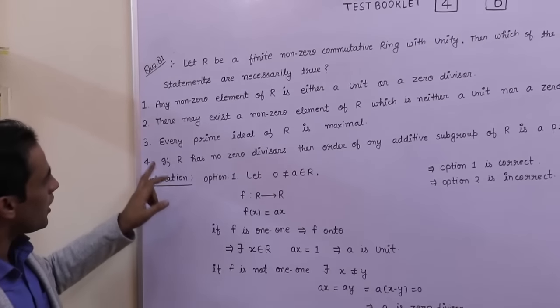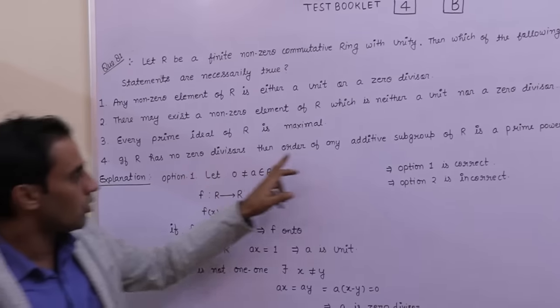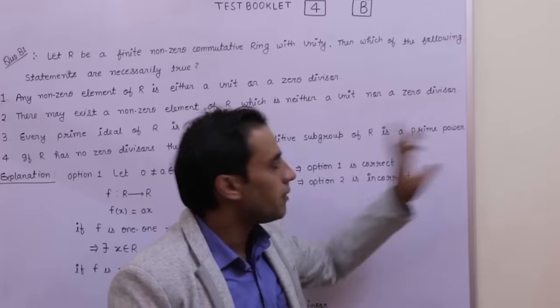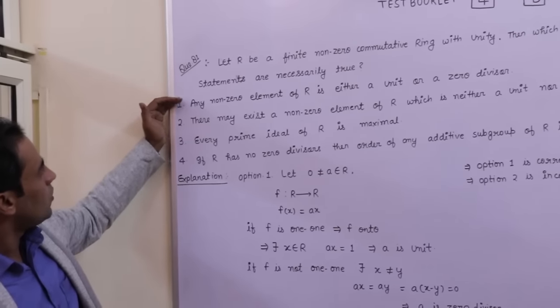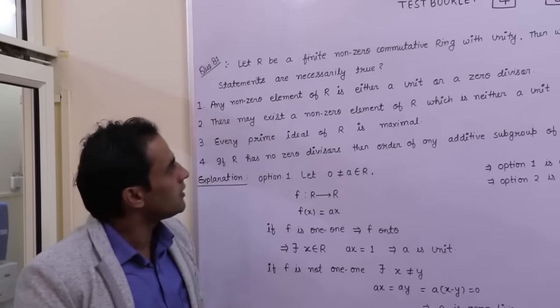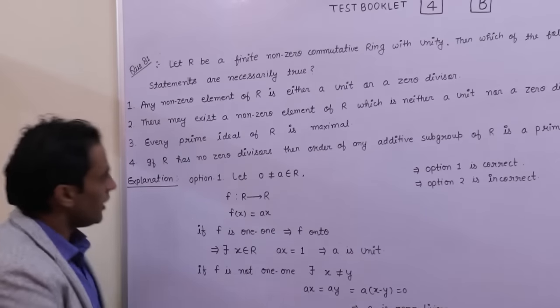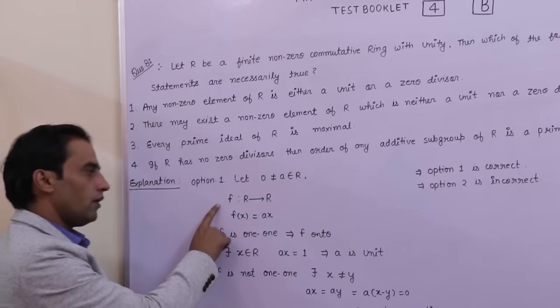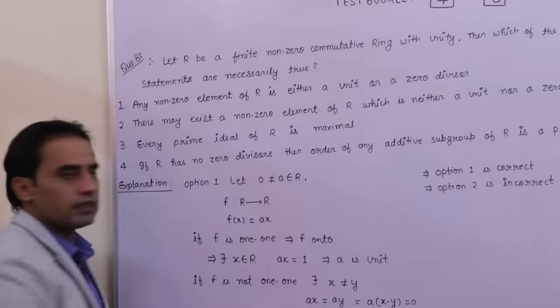So let's start with option one. Any non-zero element of R is either unit or zero divisor. Let A be any non-zero element. Then define F, a function from R to R such that F(X) equals AX.